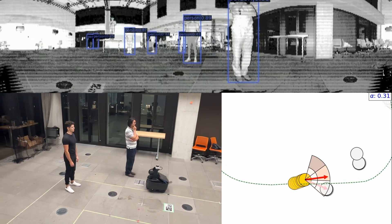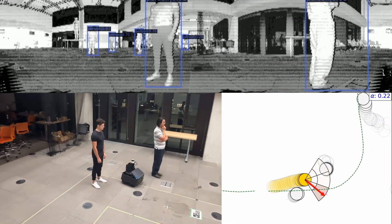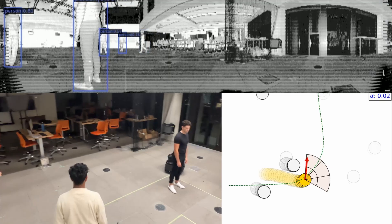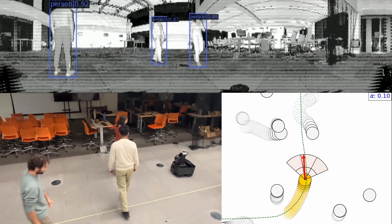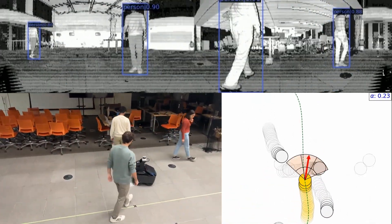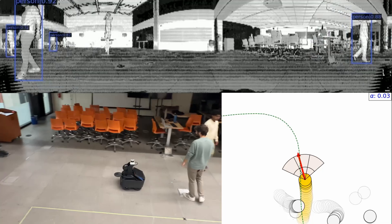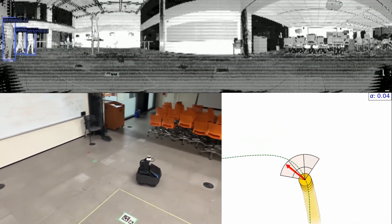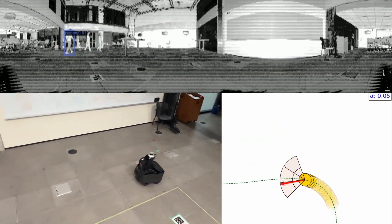In the following clips, we see Dr. MPC weaves around static humans and deviates from its path and slows down when encountering moving humans. Then, when no humans are interfering, Dr. MPC learns to simply follow the MPC action as indicated by the low alpha value.